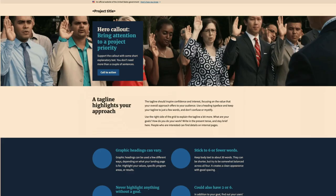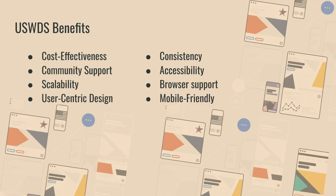I'm going to do a quick overview of the US Web Design System for those who are not familiar with it. It's basically a design system built and maintained by the federal government for use mostly by the federal government. It has a lot of benefits including cost-effectiveness — it's already there, so you don't have to develop it. It has a big community, scales fairly well, a very user-centric design, and it's consistent across different web pages. We want federal web pages to look like federal web pages so people know they're on a federal web page. It's very accessible, has great browser support, and is mobile-friendly.